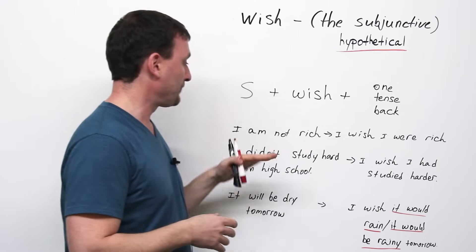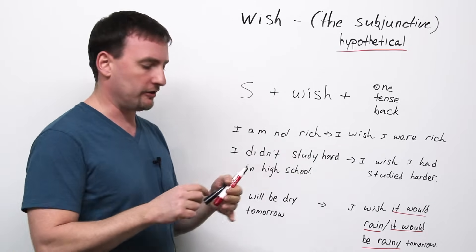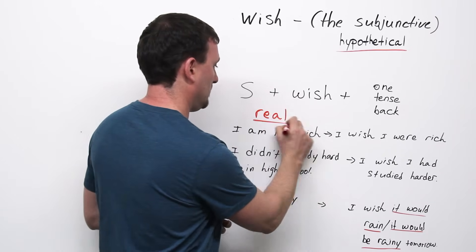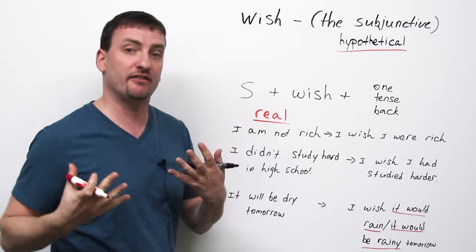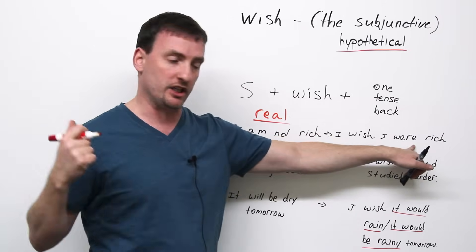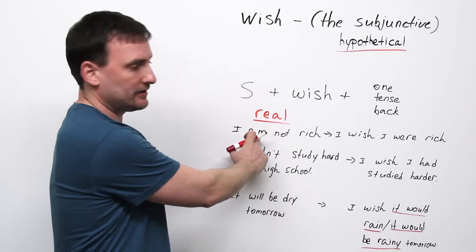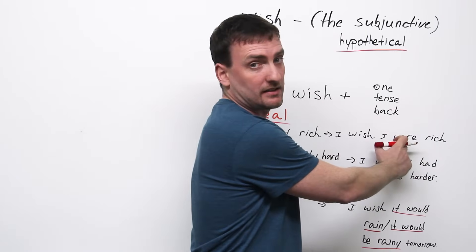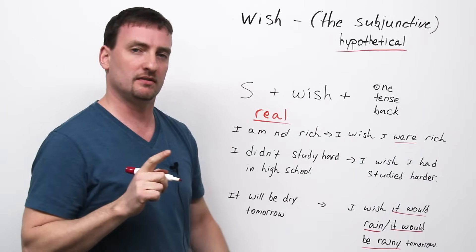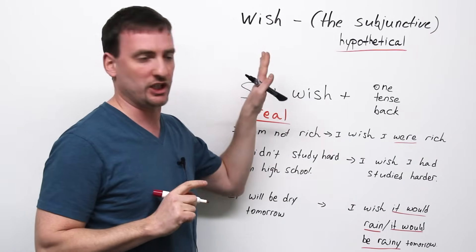Right now, I am not rich. This is the real situation. This is the fact. So, I wish I were rich. The am, present, becomes were, past. And again, remember, always were, never was. That's the main thing to remember with wish.